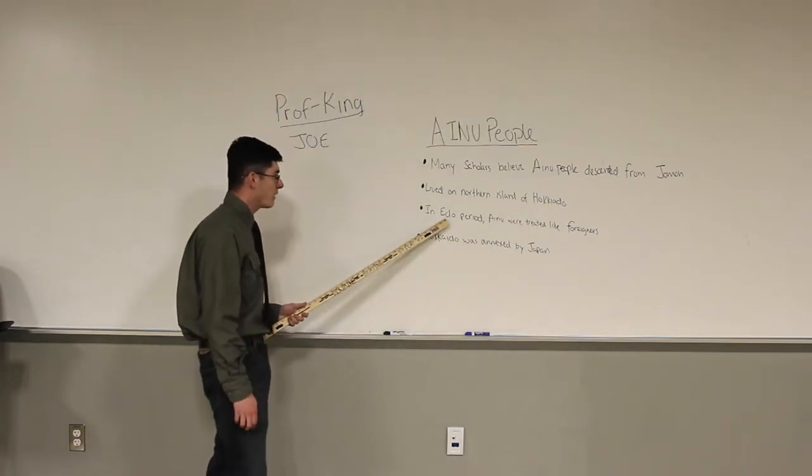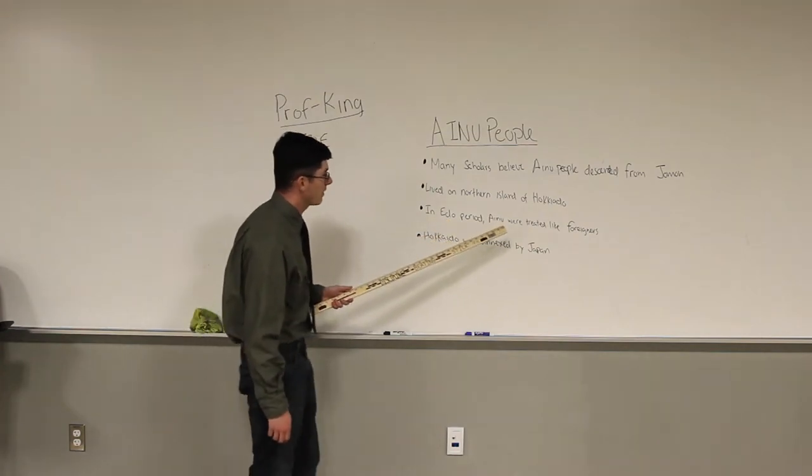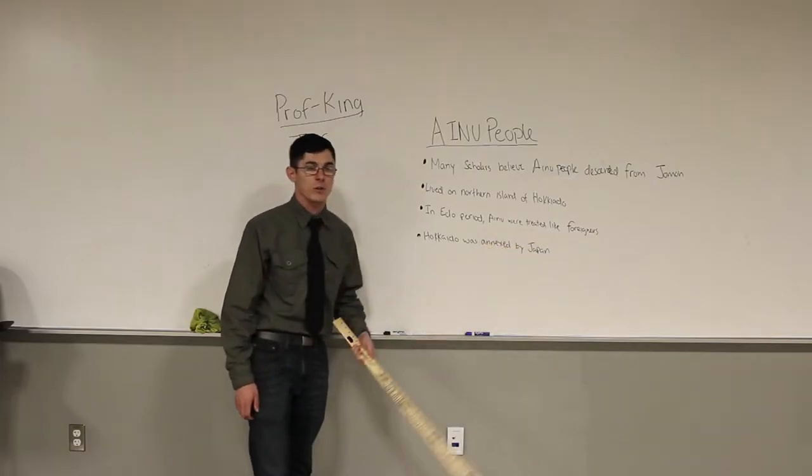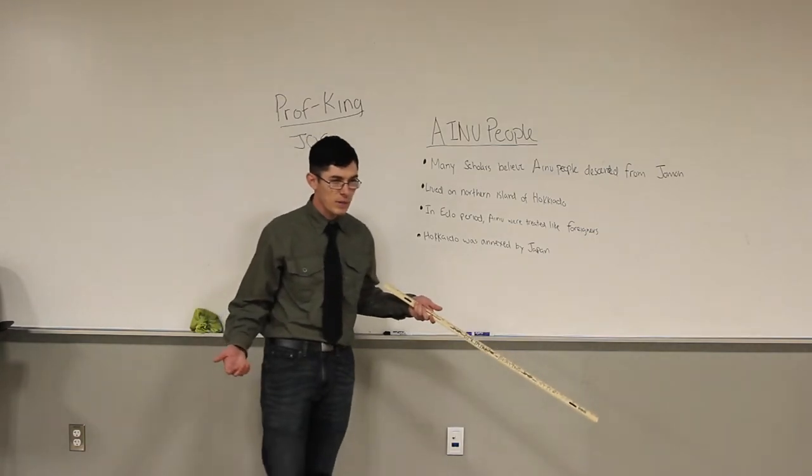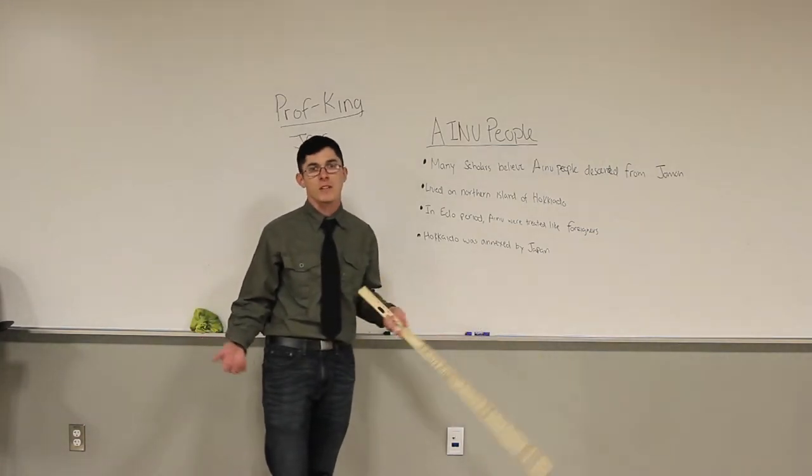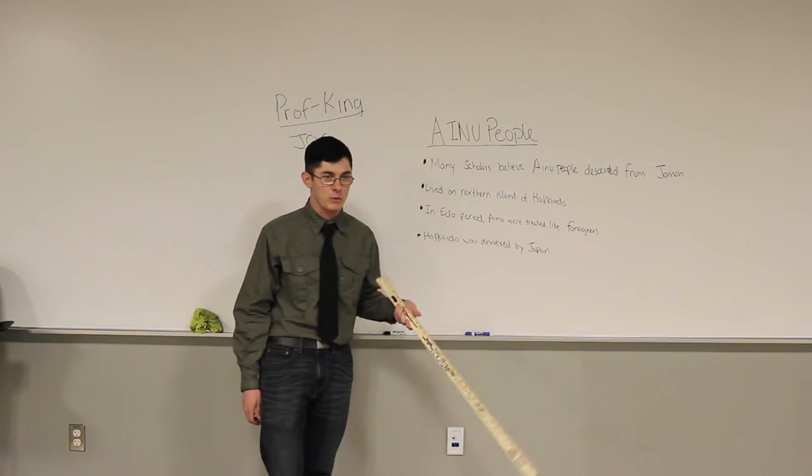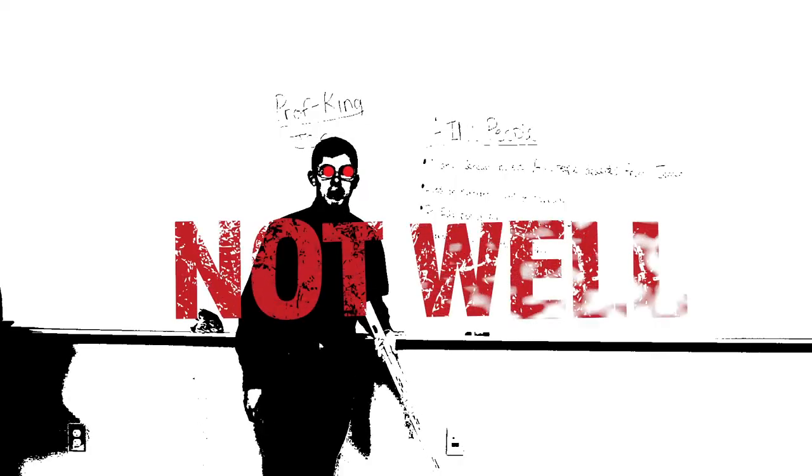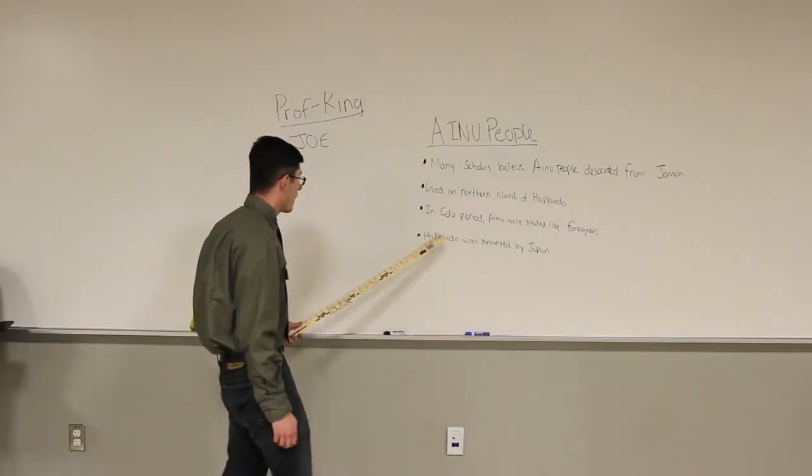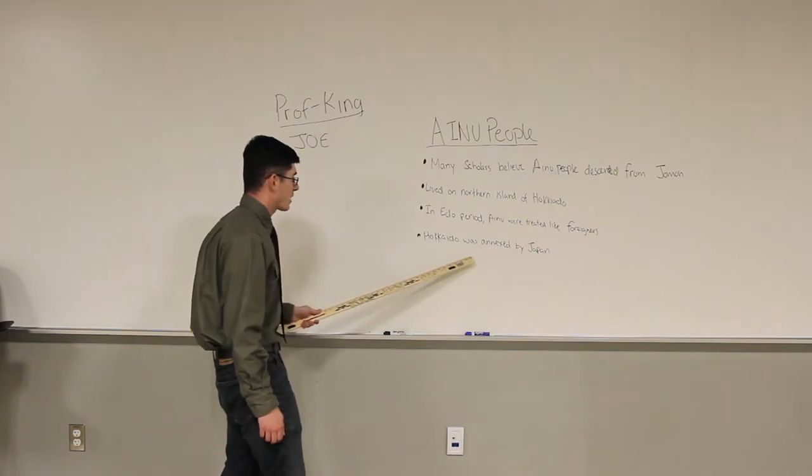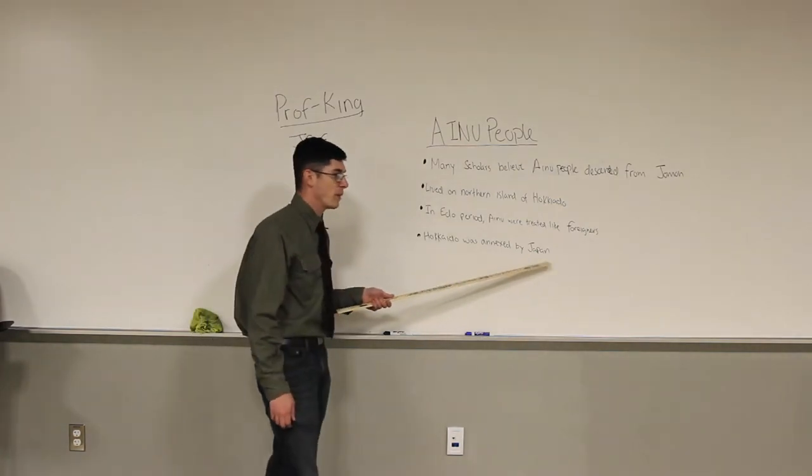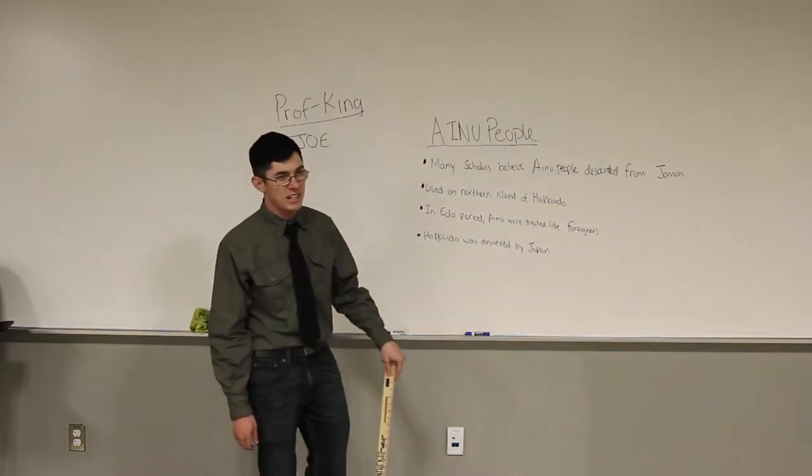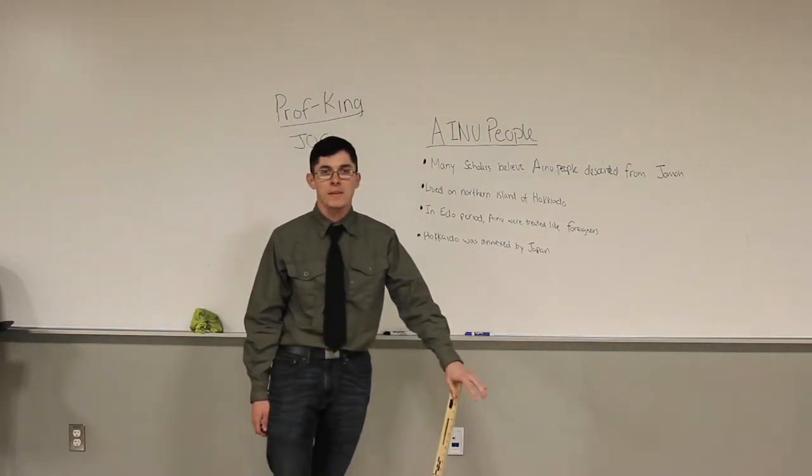In the Edo period, which is what we were talking about a lot, the Ainu people were treated like foreigners, so they didn't really trade with them, they didn't really associate with them, they kind of treated them like they treated the Europeans. Hokkaido was eventually annexed by Japan, and the Ainu people became what we know of today as Japanese.